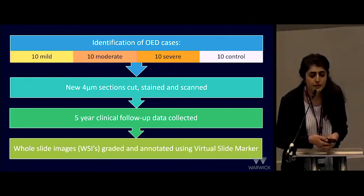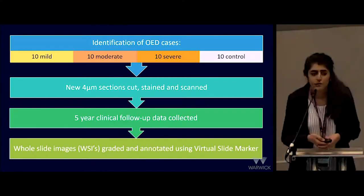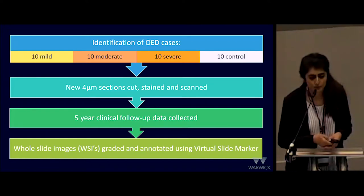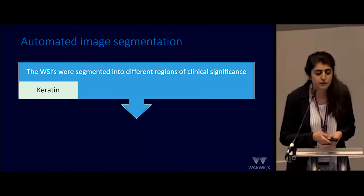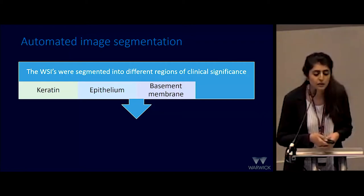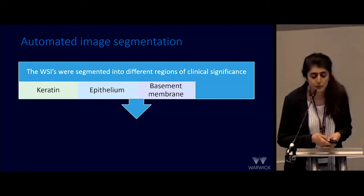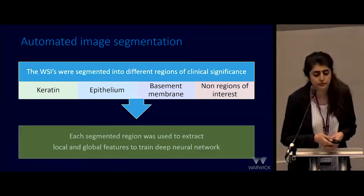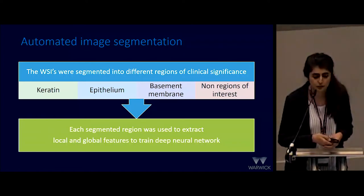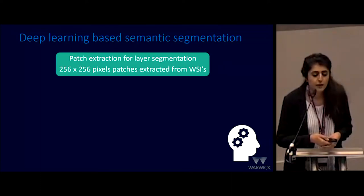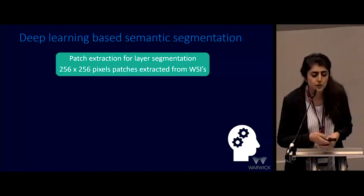The whole slide images were then graded and meticulously labelled and annotated using the virtual slide marker software developed by the computer science department here in Warwick. The different whole slide images were segmented into regions of clinical significance — these being the different layers of epithelium to include keratin, epithelium, and basement membrane, as well as non-regions of interest. For patch extraction for layer segmentation, we obtained pixel patches measuring 256 by 256 at magnification times 20.